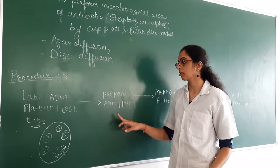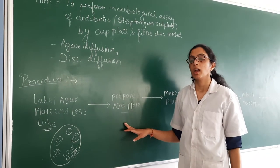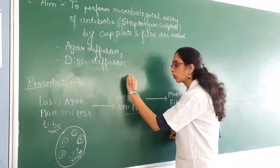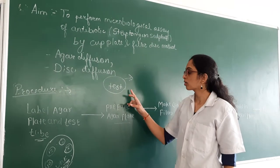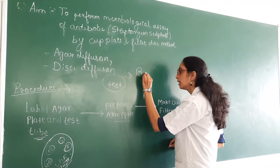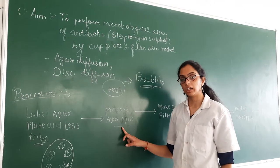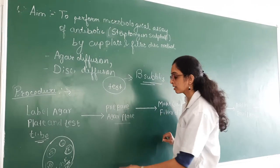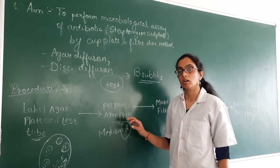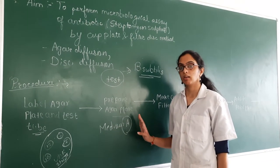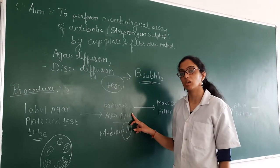Second, prepare the agar plate by adding the molten agar and then add the test microorganism by the spread plate technique. The test microorganism specific to this antibiotic is Bacillus subtilis. The medium required for streptomycin is medium A — out of the 10 mediums specified in the IP, medium A is required for the microbiological assay of streptomycin sulfate.